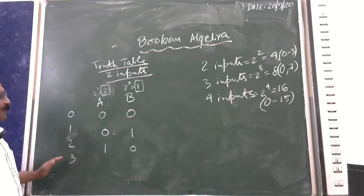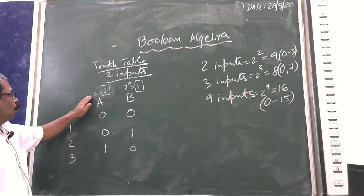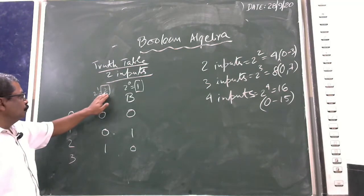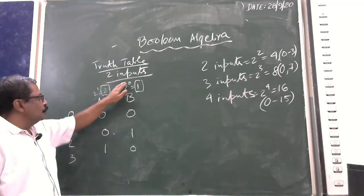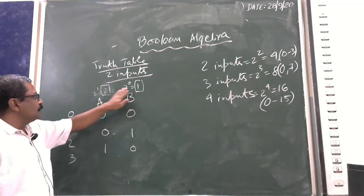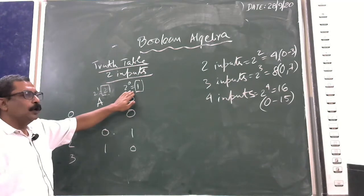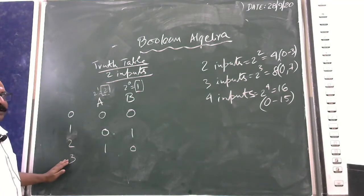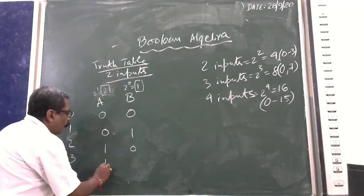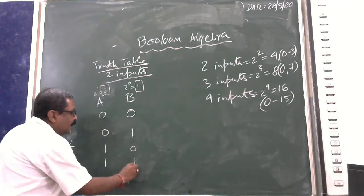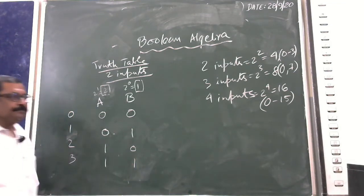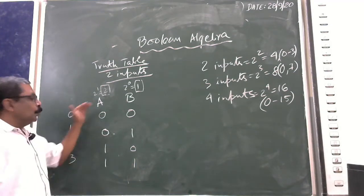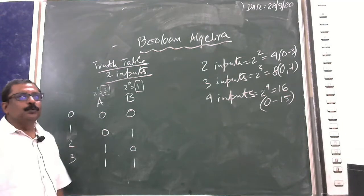For the value 3: 2 to the power 1 is 2, and 2 to the power 0 is 1, so 2 plus 1 equals 3. That means both A and B are ON — giving the combination 1, 1. This part is for understanding purposes.